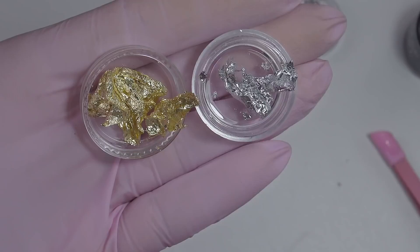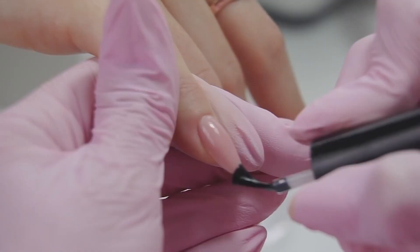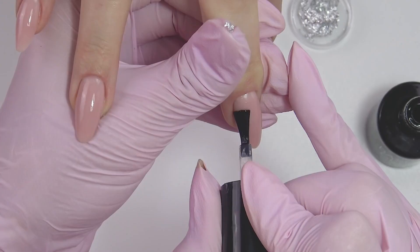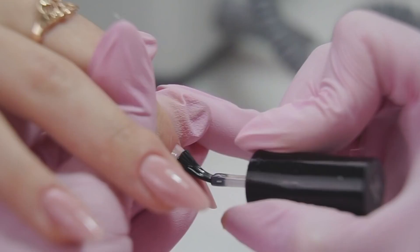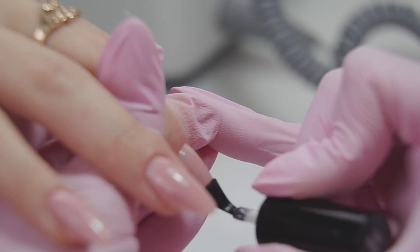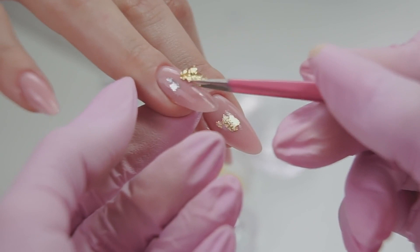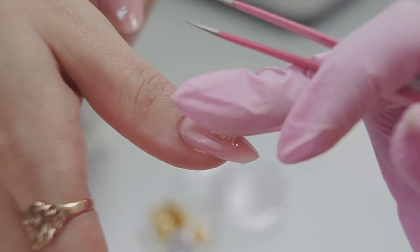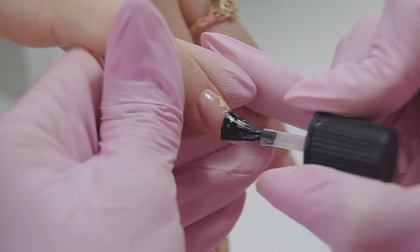For the design, I'll be using this thin foil looking like leaf gold. Thinly coat the nail plate with any base or apply a sticky primer to make the foil stick. Cure for 10 to 15 seconds. Applying larger fragments in gold foil and the smaller ones in silver.